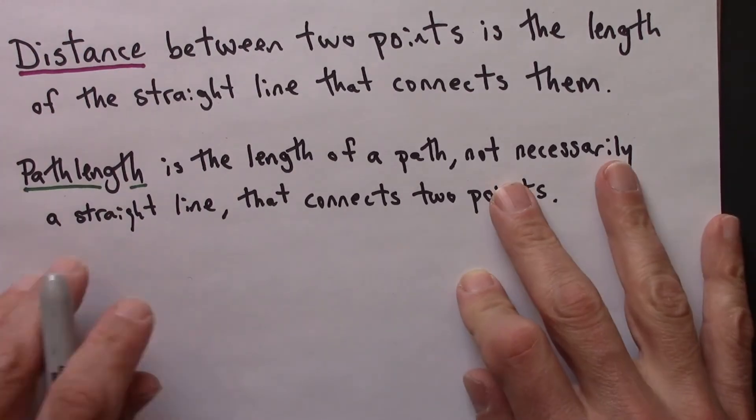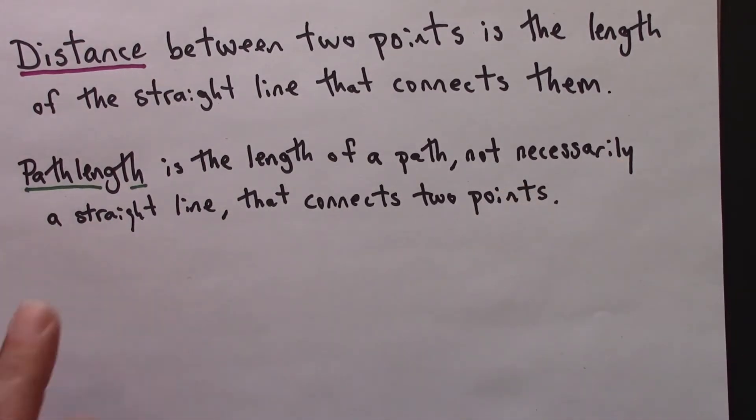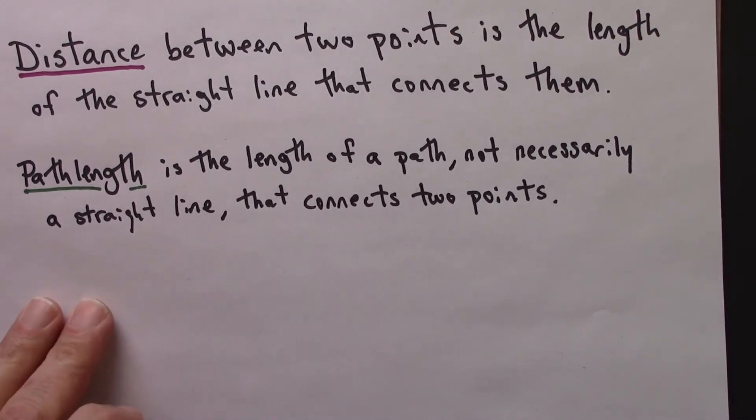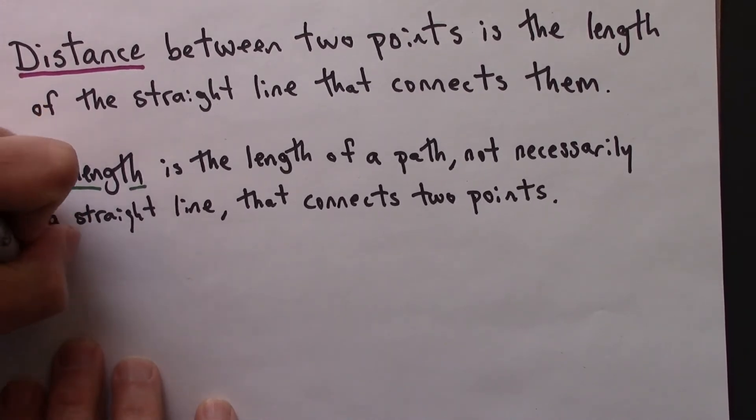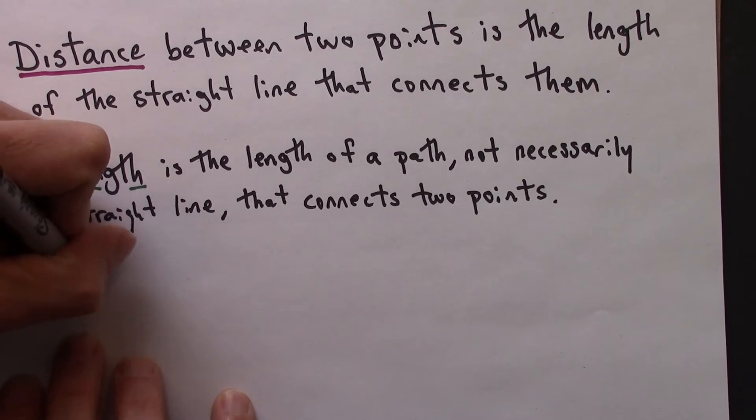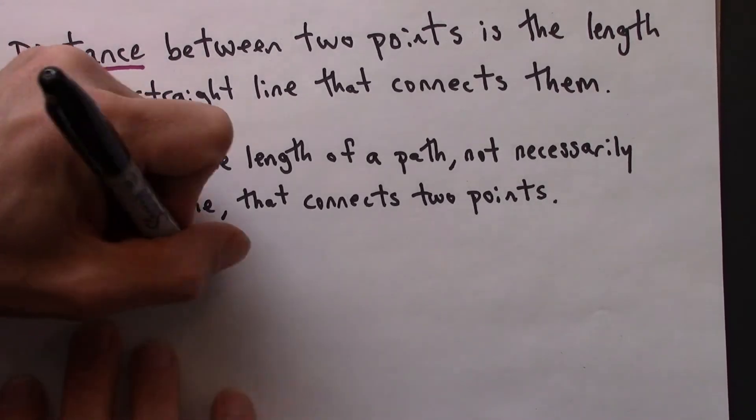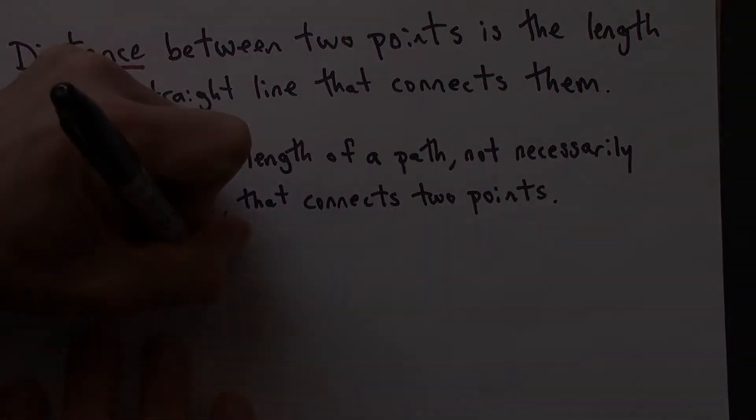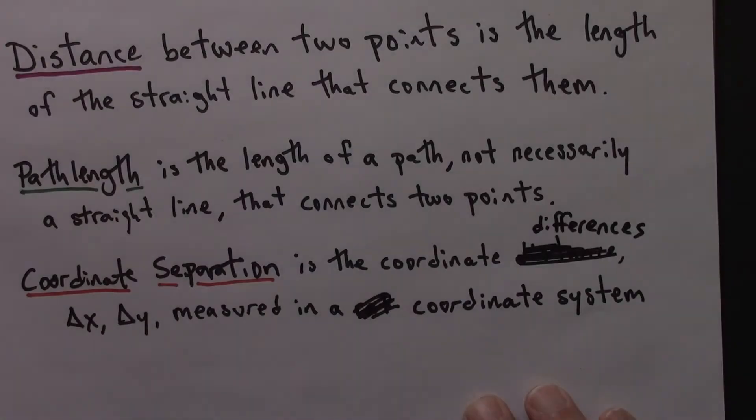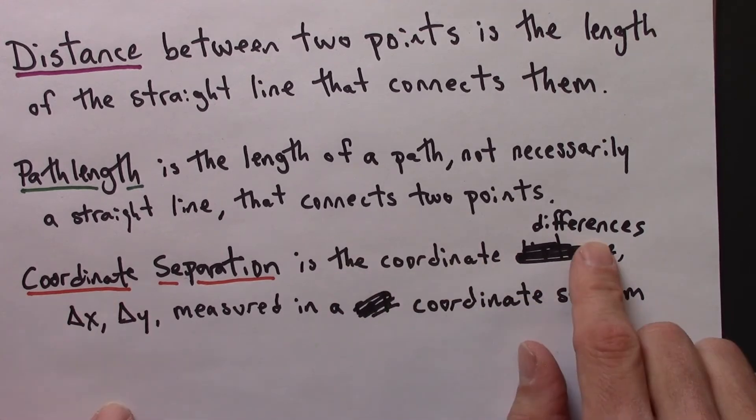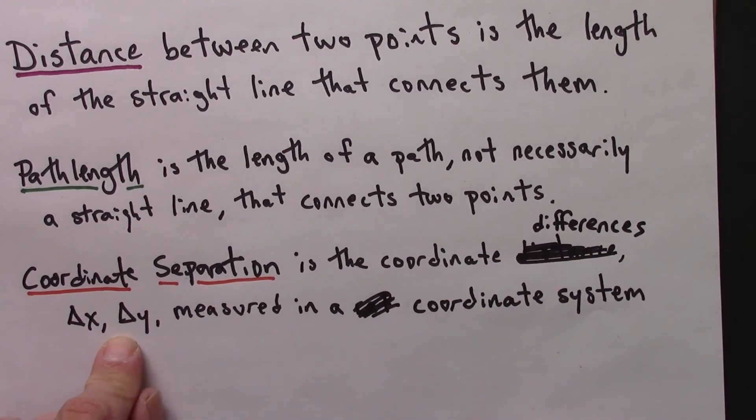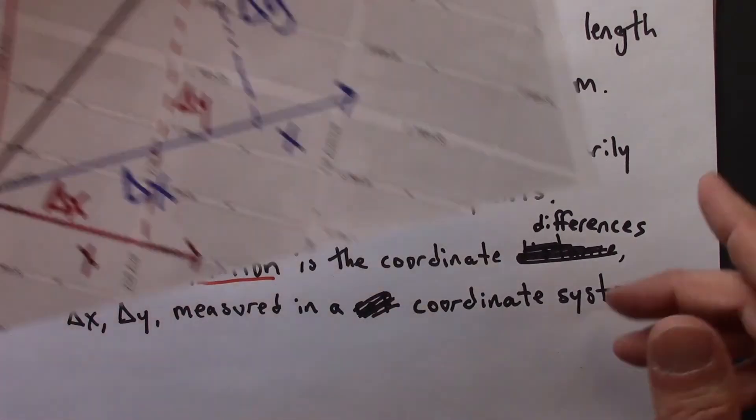To conclude, let me mention just one more way of measuring the distance between two points. And that's the coordinate separation. The coordinate separation is the coordinate differences, delta x, delta y, measured in a coordinate system.